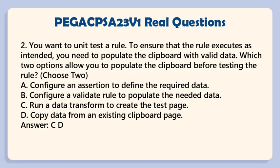Question 2: You want to unit test a rule. To ensure that the rule executes as intended, you need to populate the clipboard with valid data. Which two options allow you to populate the clipboard before testing the rule? Choose two. a. Configure an assertion to define the required data. b. Configure a validate rule to populate the needed data. c. Run a data transform to create the test page. d. Copy data from an existing clipboard page. Answer: c, d.